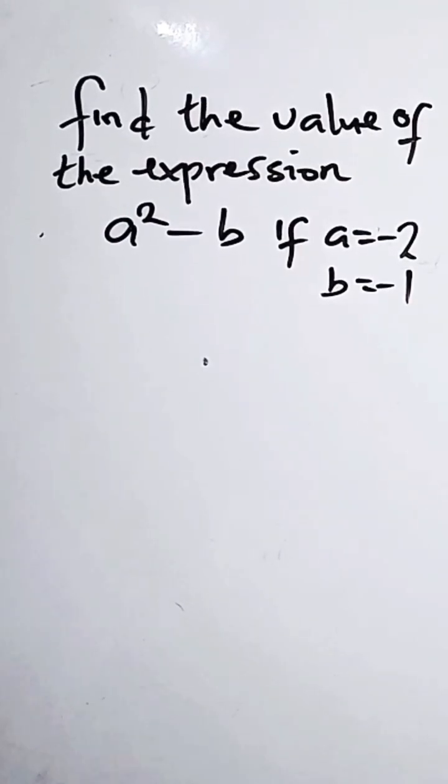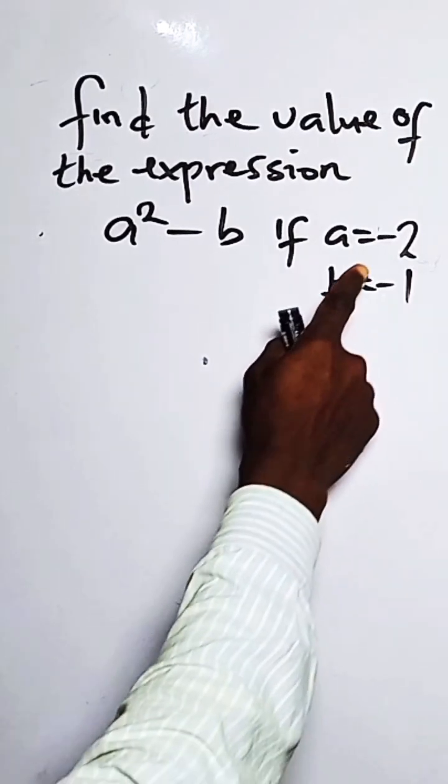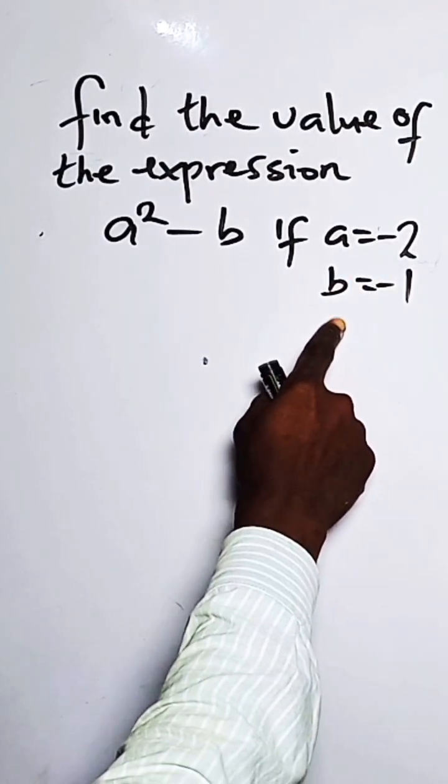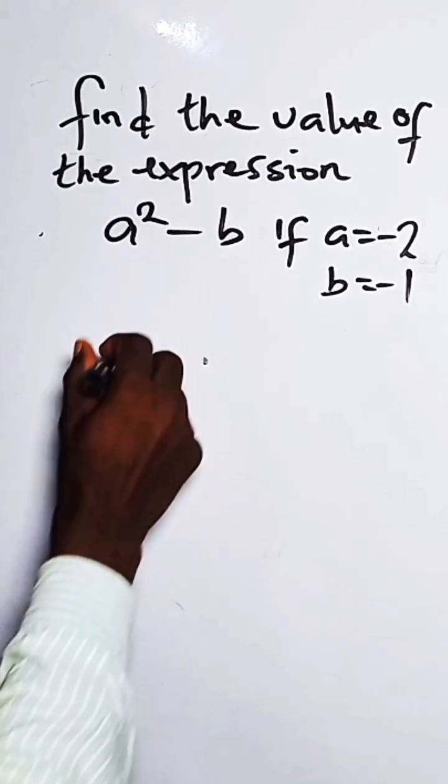The question says, find the value of this expression. We have a squared minus b when a equals minus 2, b equals minus 7. So what's the value of this expression?